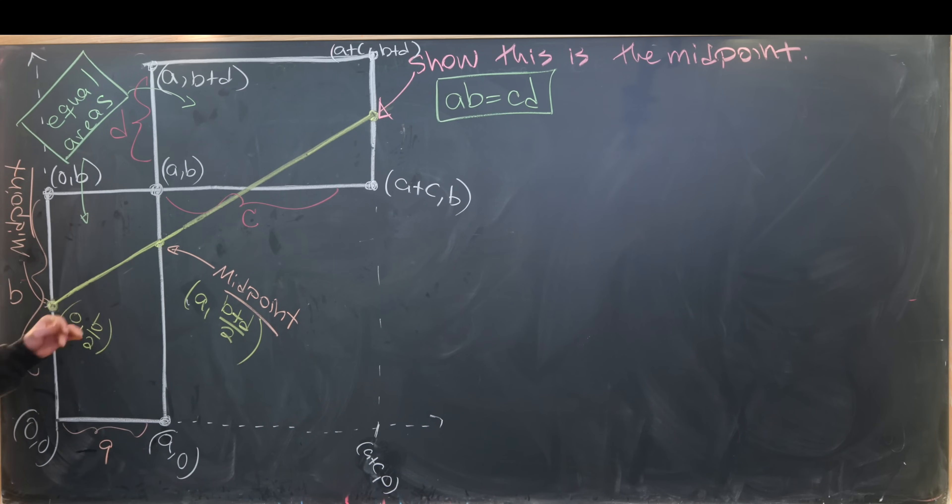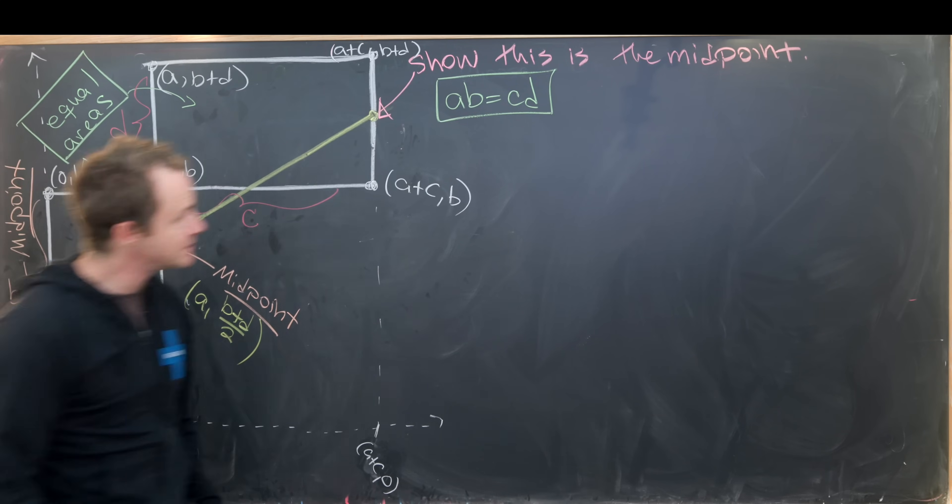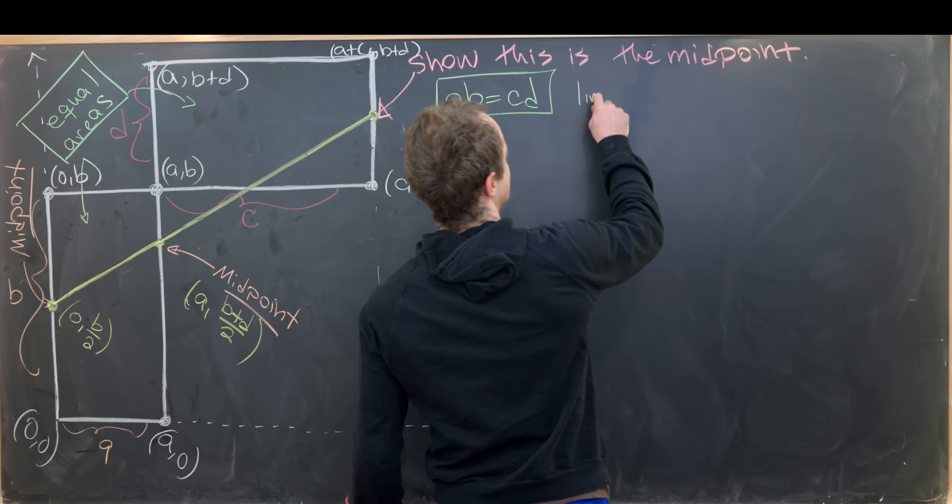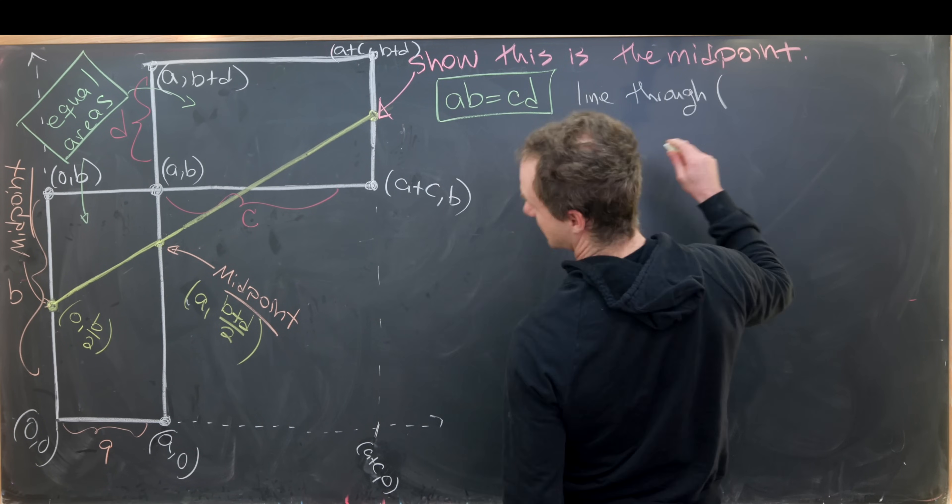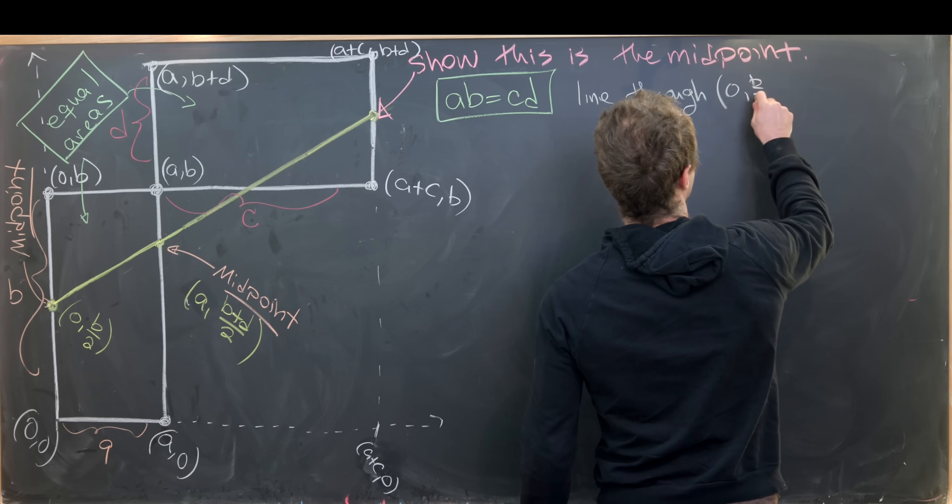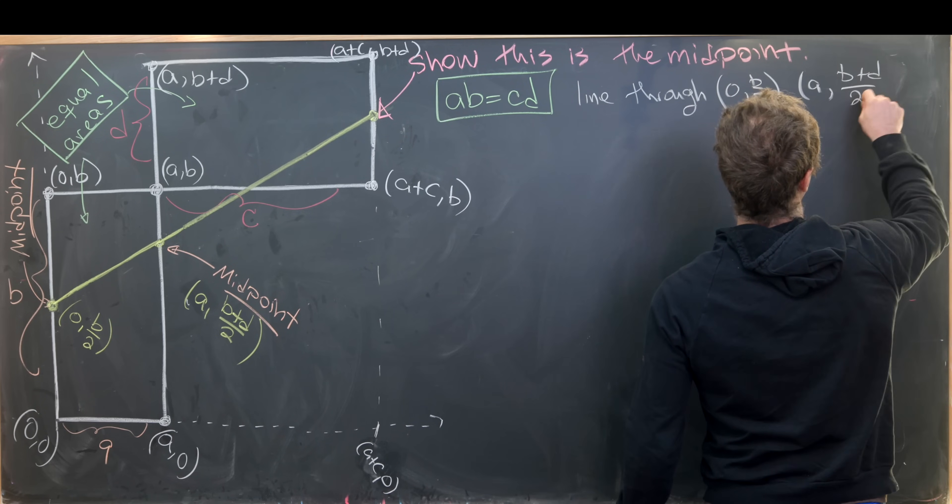Now what we'll do is calculate the line going through these two points and find the intersection with this vertical line. So let's maybe write that out over here. We want to find the line through our point (0, b/2) and (a, (b+d)/2).